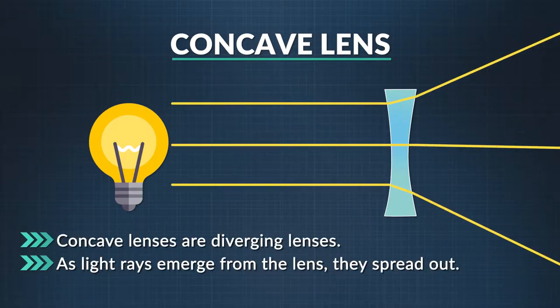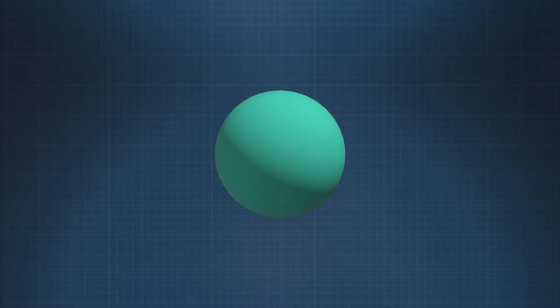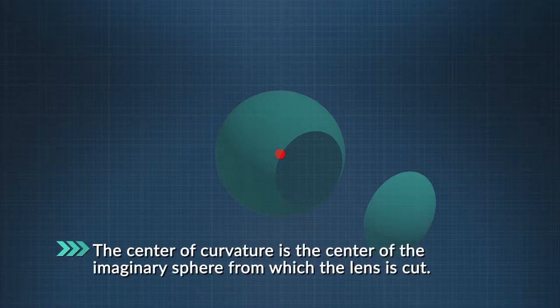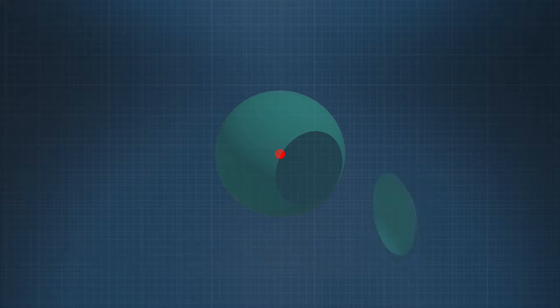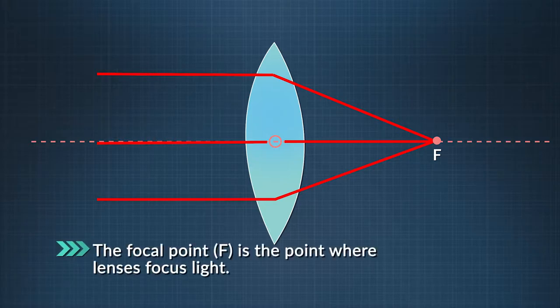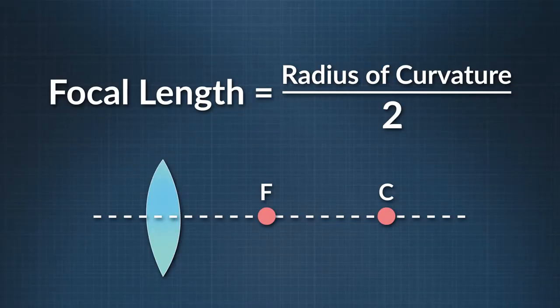Before we talk about how curved surfaces affect the images we see, let me explain a few important terms that help us understand how the optics of spherical lenses work. First, the center of curvature: think of a spherical lens as a part of a sphere — a section that has been cut out. The center of curvature is the point at the center of that imaginary sphere. Next, the principal axis is the horizontal line connecting the center of the lens with the center of the imaginary sphere. The focal point is simply where converging or diverging lenses focus light. There is a formula: it's equal to half the distance from the center of the lens, at the principal axis, to the center of curvature.